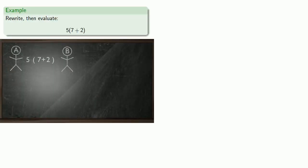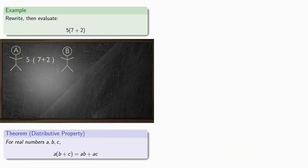So for example, let's say we can rewrite, then evaluate, five times seven plus two. So the distributive property says that this multiplication, five times, can be distributed amongst the addition, seven and two.